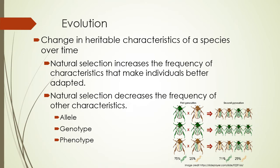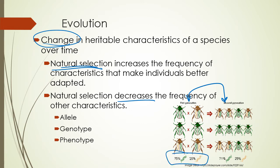Evolution is that change in heritable characteristics of a species over time. Natural selection increases the frequency of traits that make individuals better able to survive in their environment and decreases the frequency of those that do not. Here is an example: in the first generation, 75% of the alleles in this population were green and 25% were a yellow-orange-brownish color. In the second generation there was a different allele frequency, which means evolution did occur — a change in allele frequency over time.